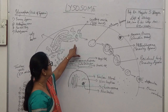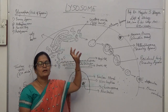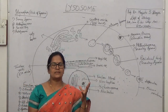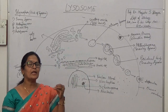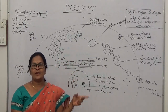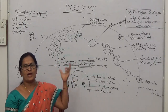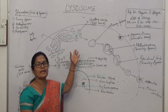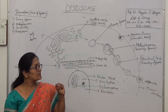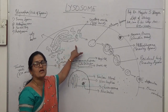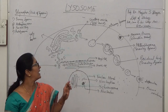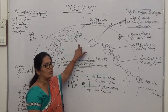These secretory vesicles may contain different types of chemicals such as different types of substances stored in the secretory vesicles. It may be lipid, it may be protein, it may be carbohydrate, or it may sometimes contain some hydrolytic enzyme. And if the vesicle contains strong enzymes or hydrolytic enzyme or degradative enzyme, it is called as Lysosome.